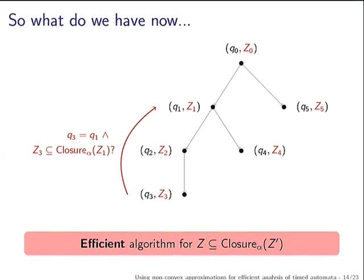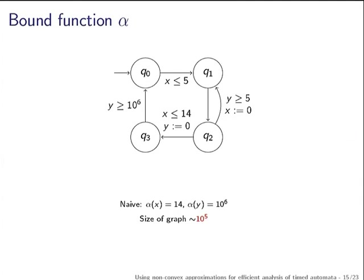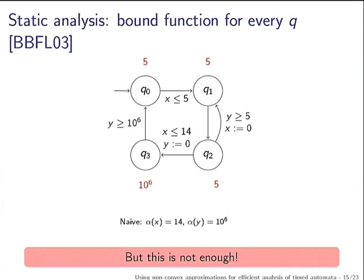We compute the normal zone graph and use this efficient closure inclusion test for termination. Note that the closure depends on a parameter alpha — a bound function that associates some constant to every clock. The smaller this bound function, the bigger the closure is and the better for you. The next quest is to find a very good, tight bound function.